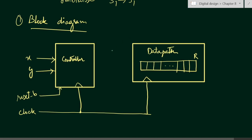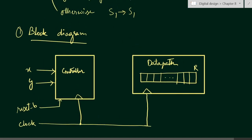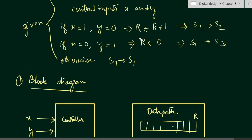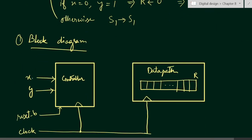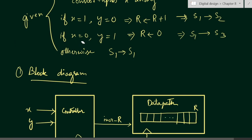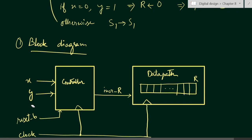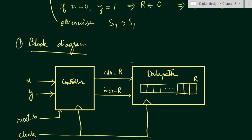We have two signals: one is the clear signal and one is the increment signal. When x equals 1 and y equals 0, we increment the register — the control signal is incr_r (increment register r). When x equals 0 and y equals 1, we send a clear signal clr_r to the data path to clear register r.